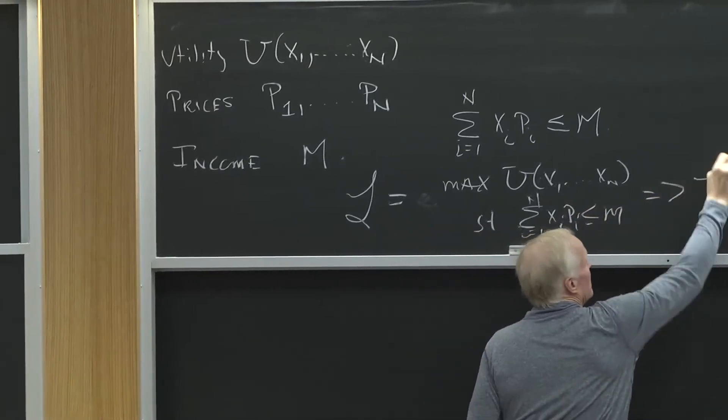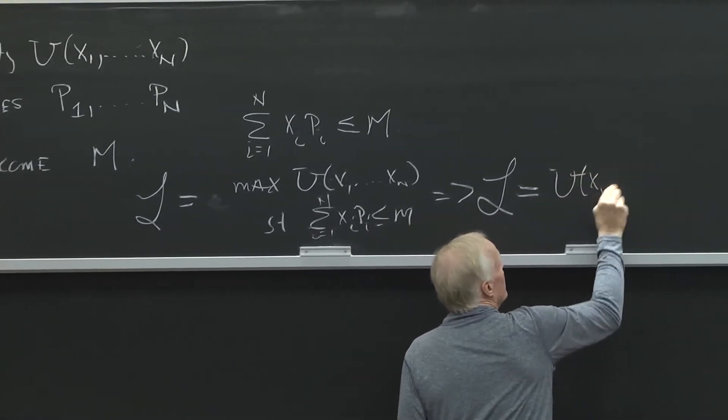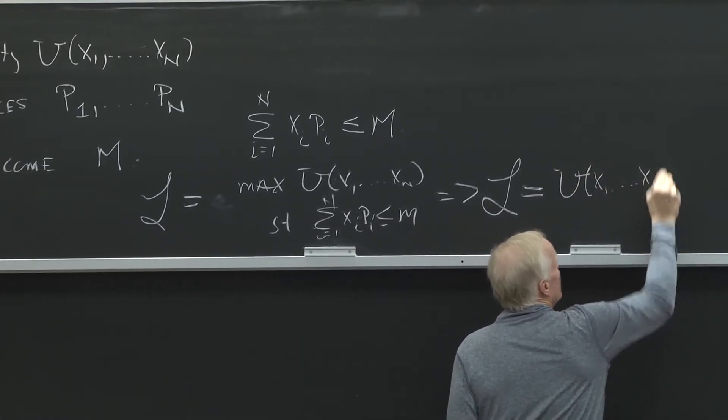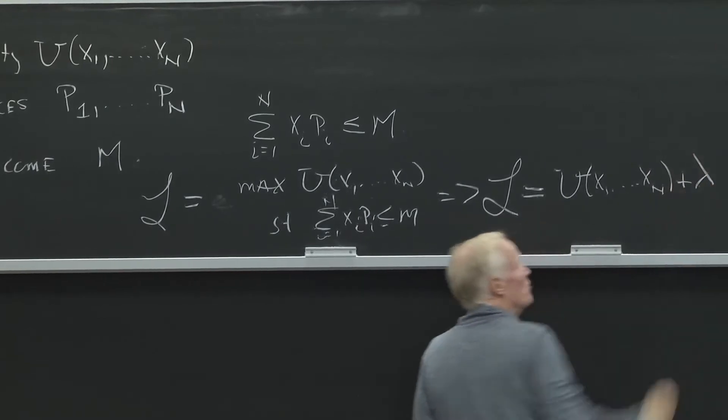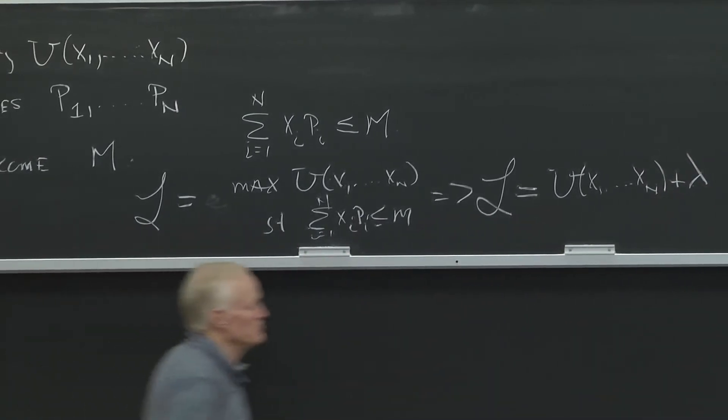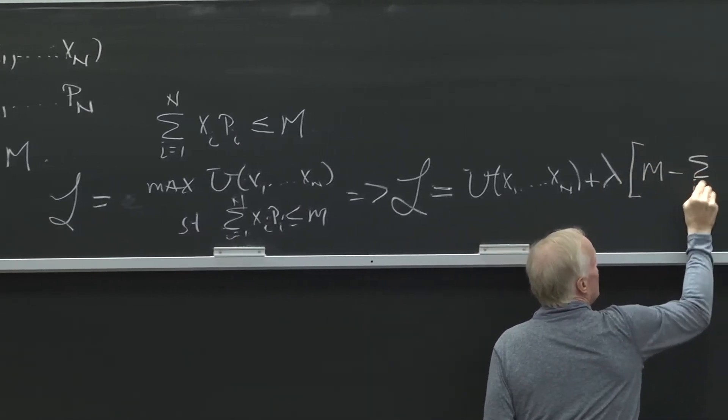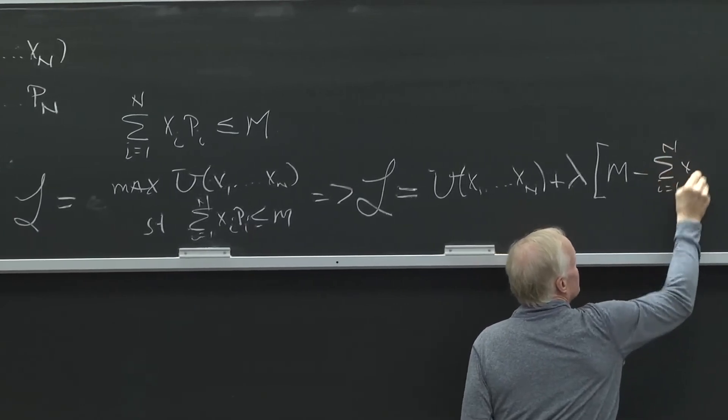That implies my Lagrangian can be written as u of x1 to xn, plus this magic multiplier lambda, which represents the budget constraint, the power of the budget constraint, as m minus the sum of i equals 1 to n, xi pi.